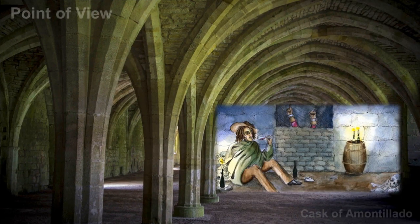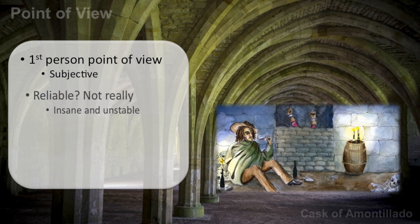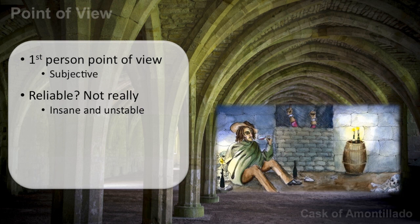Now let us turn to point of view. As in most of Poe's stories, we have a first-person point of view. It gives us a subjective view — we only see one side of the story. And as in many of his tales of criminal insanity, we have to ask ourselves: is this narrator reliable? He's not really reliable, and the reason for this is his insanity — he's insane and unstable. One of the reasons we understand this is that he opens by claiming his sanity, but then goes on to meticulously tell us how he carried out his murder. As readers, we eventually understand that he must be mad.